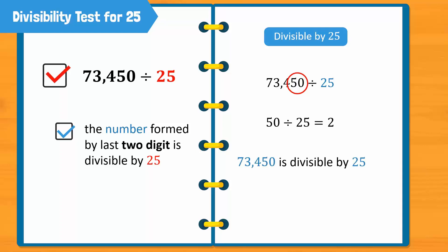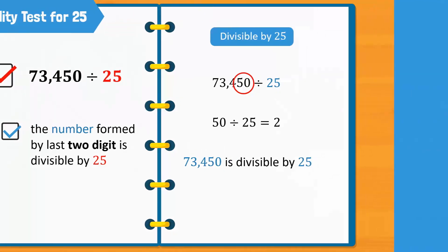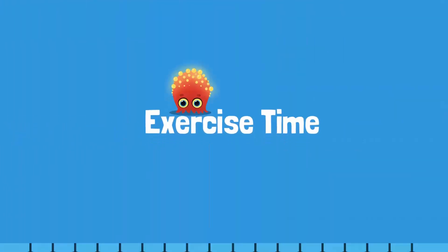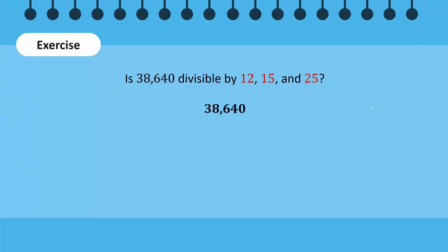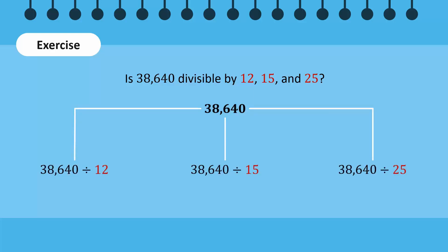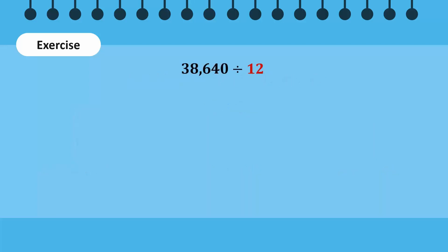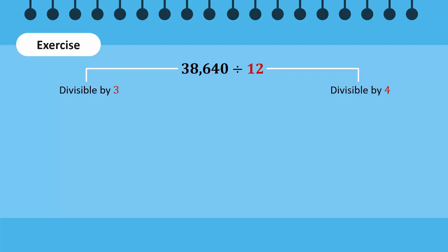You should try divisibility tests with your friends. Time for an exercise. Can you tell if 38,640 is divisible by 12, 15, and 25? First, let's check if this number is divisible by 12. We'll do this by applying the divisibility tests of 3 and 4, since they are the factors of 12. Is the sum of the digits of this number divisible by 3? The sum adds up to 21, and 21 is divisible by 3. Therefore, the original number, 38,640, is also divisible by 3.